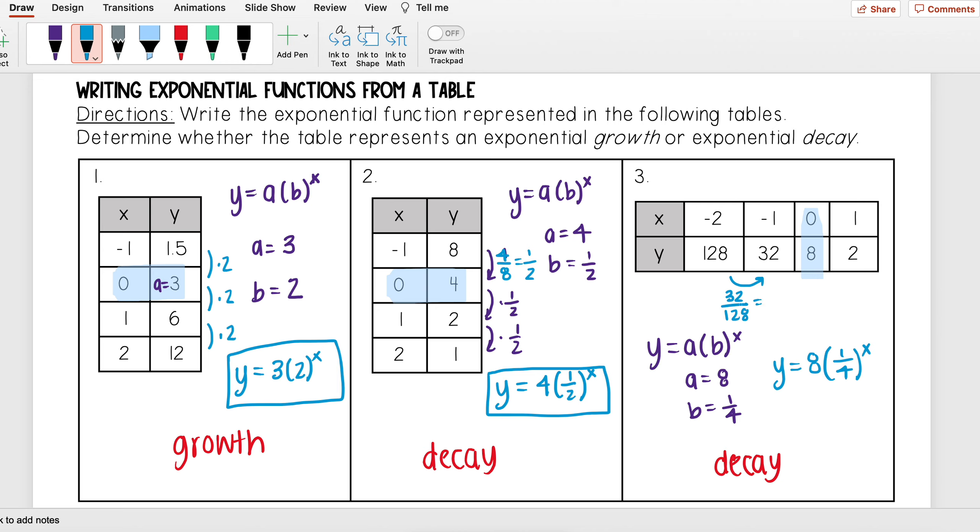When you reduce that fraction, you should get one fourth. If you don't want to do it with bigger numbers, it might be easier if you go with the smaller numbers. So I have two divided by eight. Divide two from top and bottom and you get one fourth.